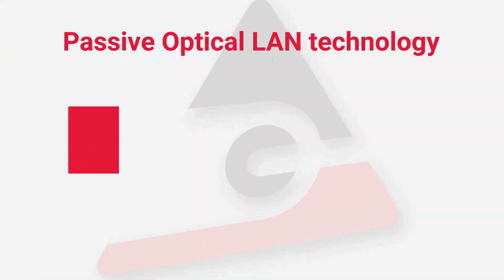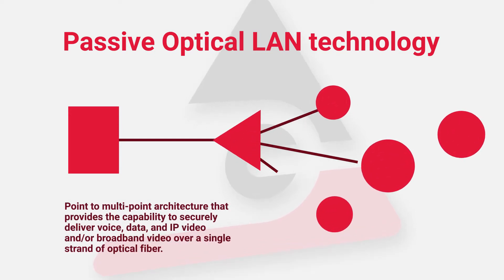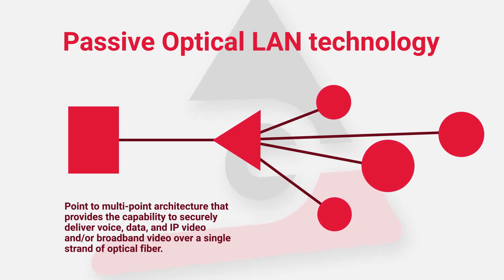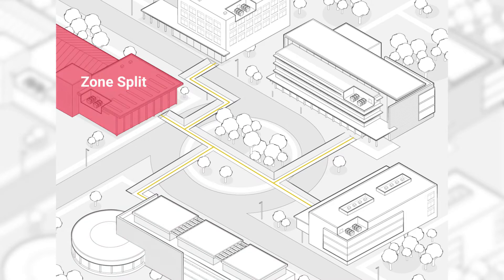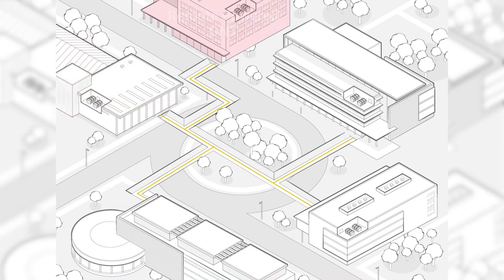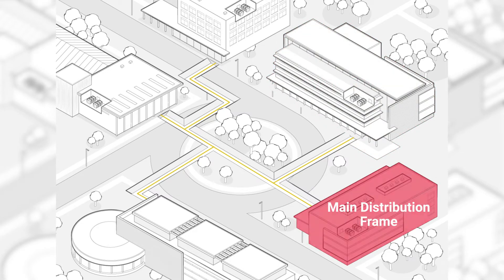Passive optical LAN technology is a point-to-multi-point architecture that provides the capability to securely deliver voice, data, IT video, and/or broadband video over a single strand of optical fiber. Depending upon the facility layout, user needs, as well as other factors, passive optical LAN networks may be deployed in a variety of ways. Let's look at four common configurations.